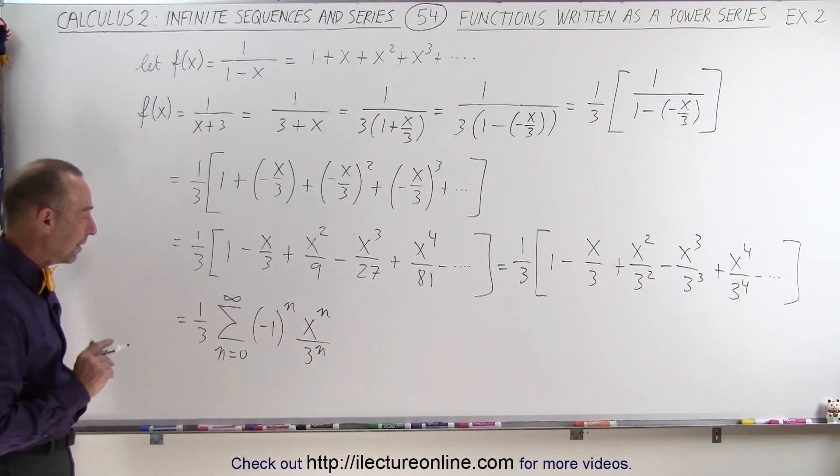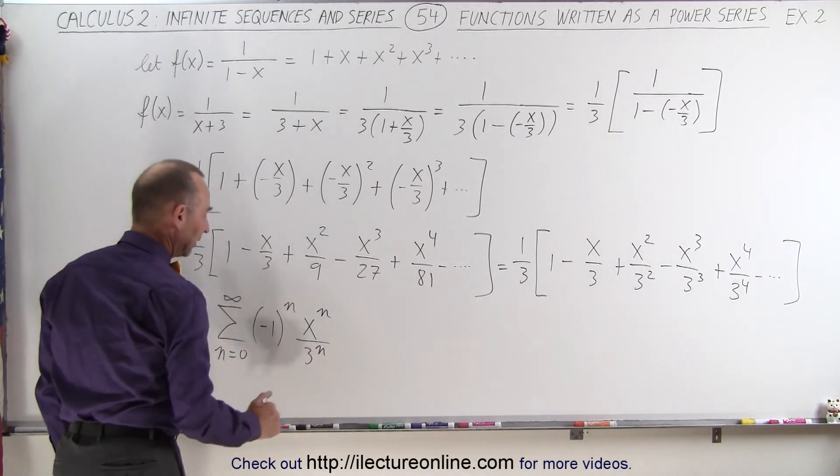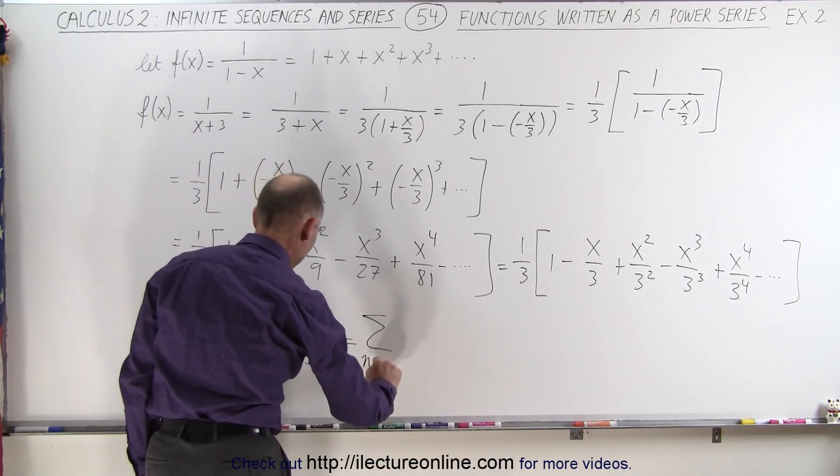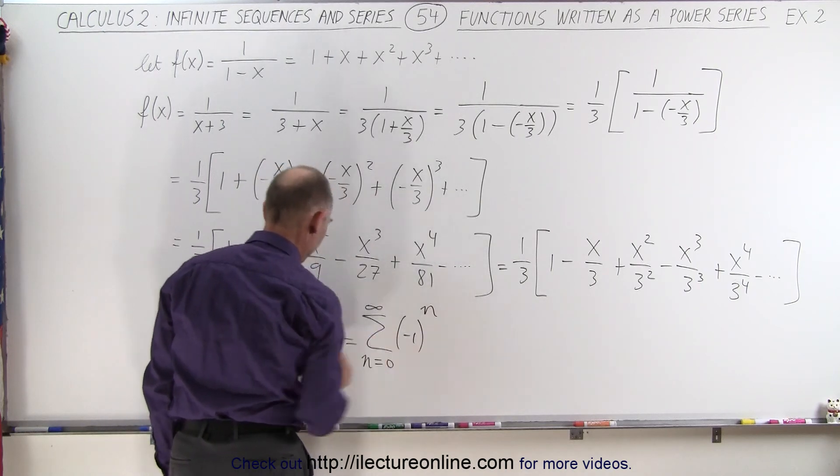Now, we're almost done. Now, what happens if I now take the 1 third and multiply it in here, then this can be written as the infinite sum of n equals 0 to infinity of negative 1 to the n power,